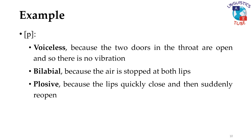Based on what we've learned so far, we can now explain how each sound is created. For example, P is voiceless because the two doors in the throat are open and so do not vibrate when the air moves through the throat. It is bilabial because the air is stopped at both lips, and it is a plosive because the lips quickly close and then suddenly reopen to cause an explosion of air.